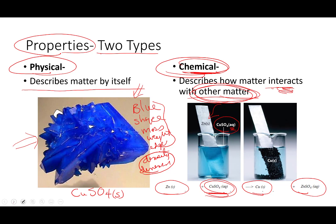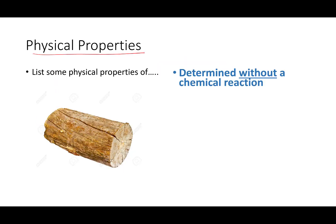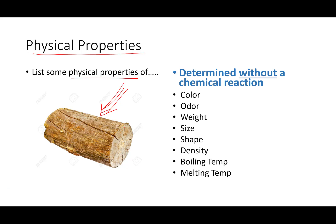Some other chemical is always going to be involved. Let's practice — if I ask you to list some properties of this log, this hunk of wood, hit pause for about 10-15 seconds and describe some physical properties. If you wrote down that it is cylindrical, a brown color, it's made out of wood — all of those are physical properties. When we talk about color, odor, weight, size, shape, density, boiling temperature, melting temperature — those are all physical properties. These describe something alone, all by itself, not interacting with anything else.